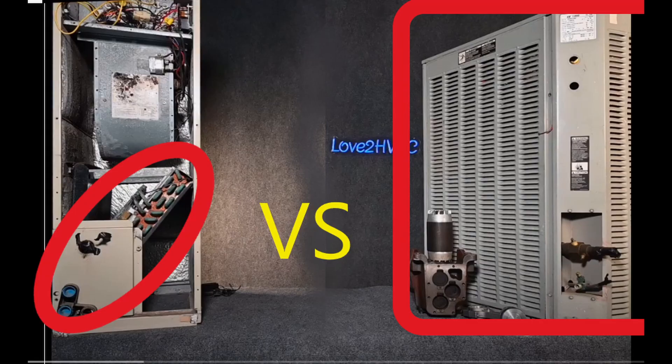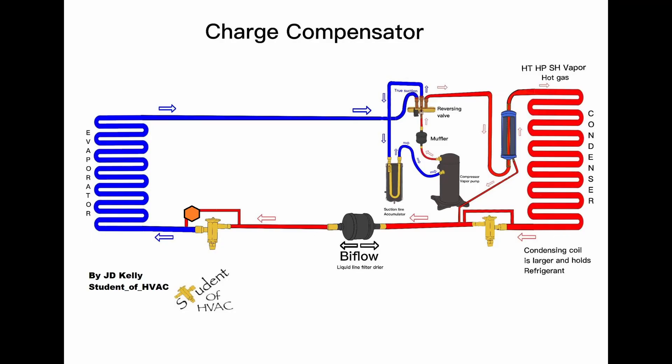That's because the condensing coil was very large in size. It was much larger in volume than the indoor coil and we needed that extra refrigerant to be in the sub-cooling of that outdoor coil.